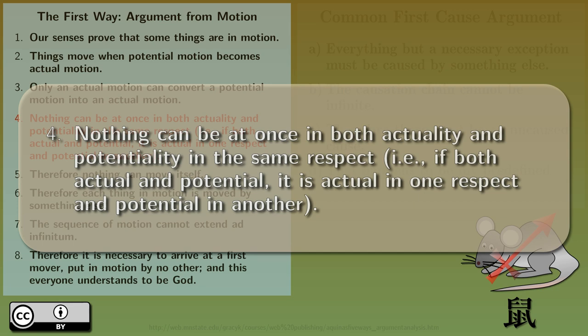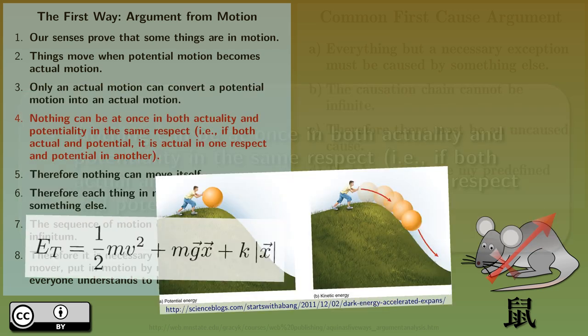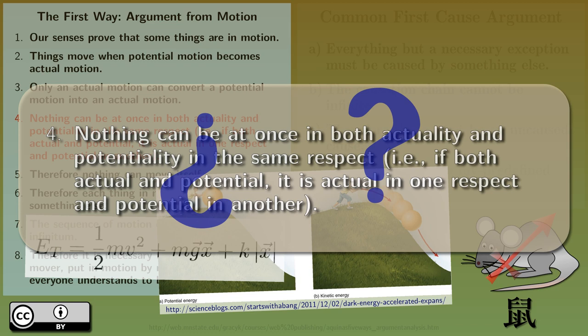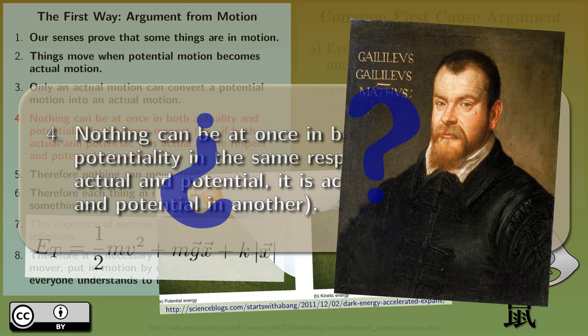Nothing can be at once in both actually and potentially in the same respect. For example, if both actual and potential, it is actual in one respect and potential in another. Well, energy is still the wrong analogy here, as a body can have both kinetic and potential energy at one given time. I cannot see this statement to have any meaning in any modern understanding of physics. By modern, I mean from Galileo onwards.